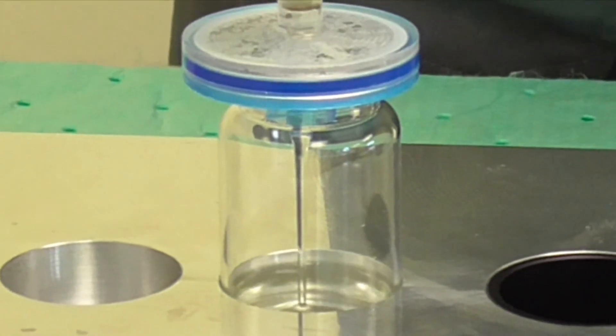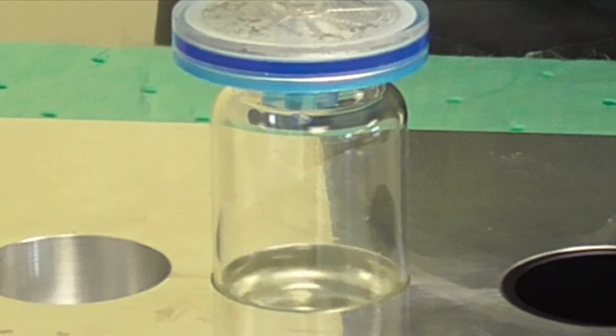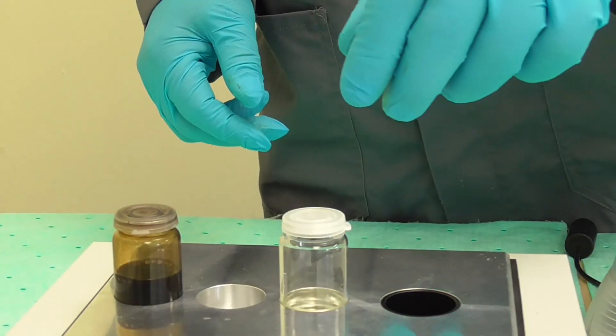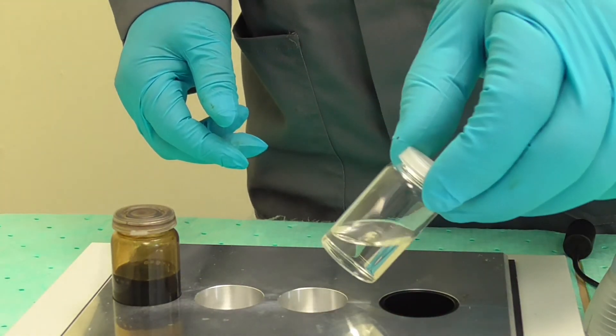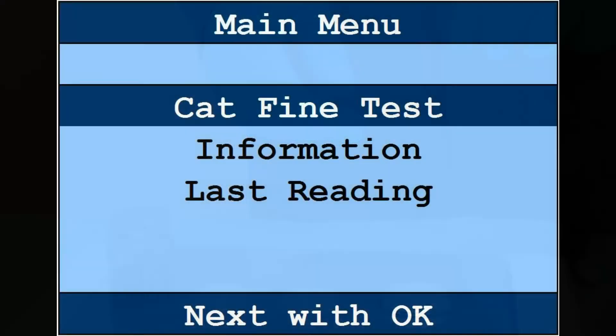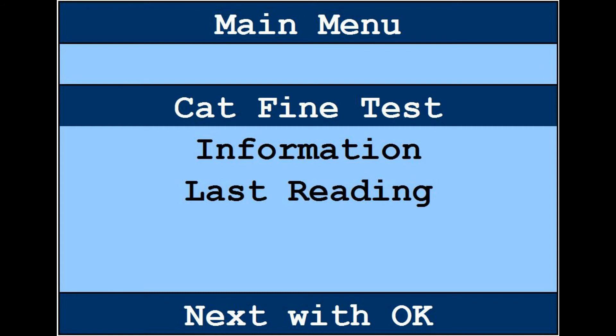Cap the vial and clean the outside with vial cleaner and a clean tissue. Place it into the measuring chamber of the device.